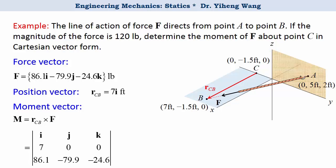We fill in the matrix. The first row, i, j, and k. The second row, the three components of the position vector R_CB. And the last row, the three components of the force vector.